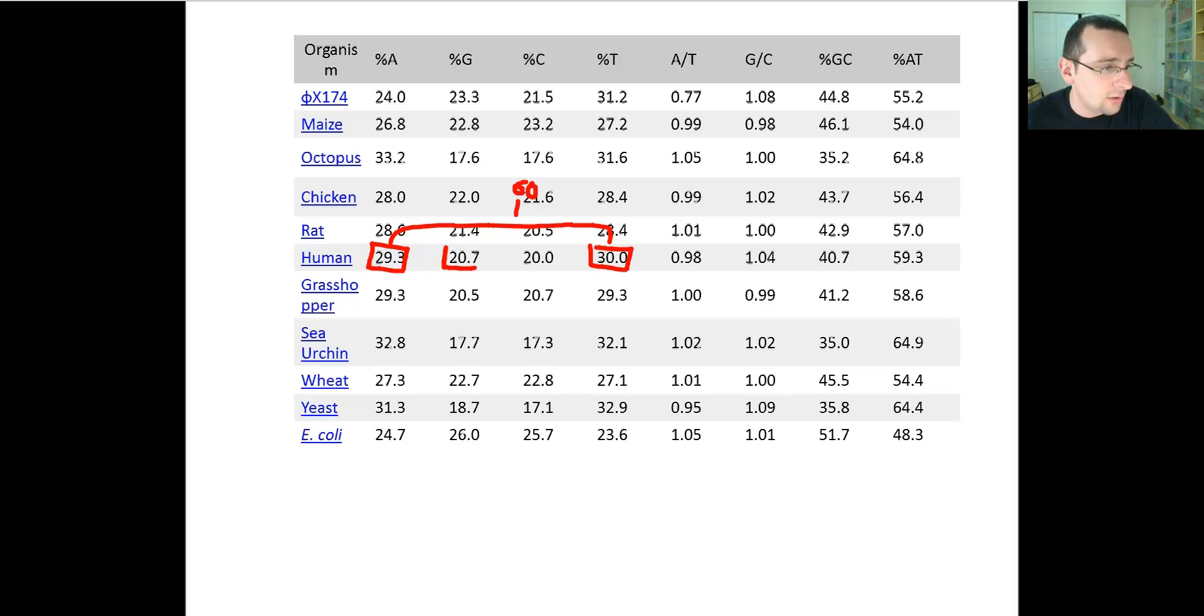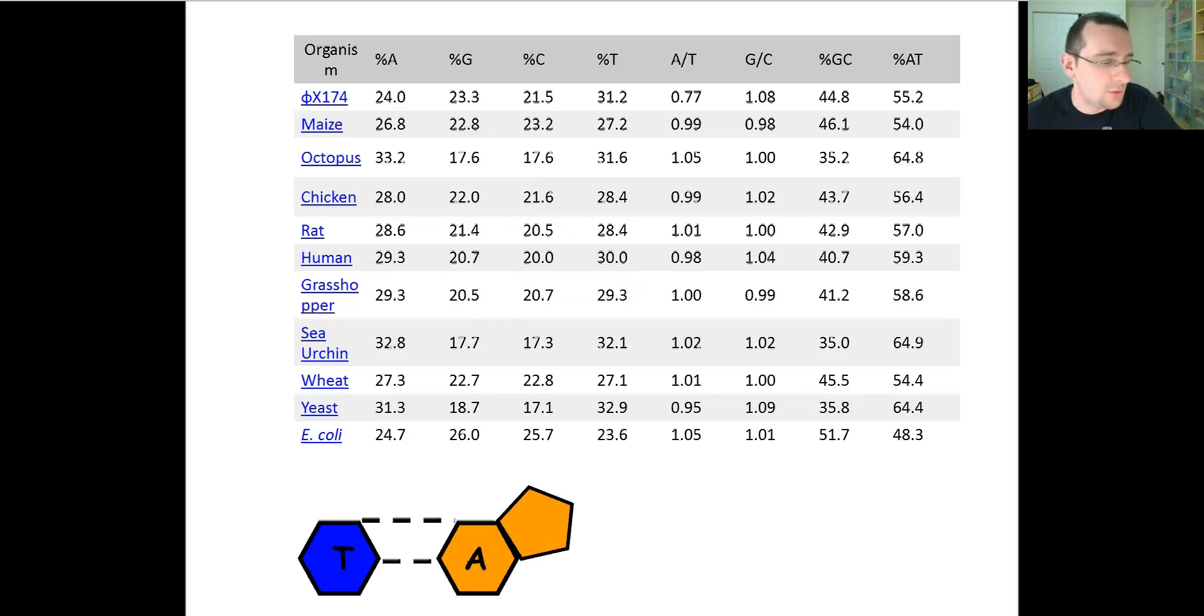And remember that this is reflecting the base pairing rules of Edwin Chargaff, where he says that A always pairs with T, with two hydrogen bonds in between, and that G always pairs with C, with three hydrogen bonds in between.